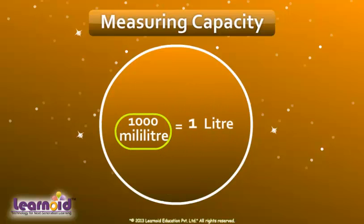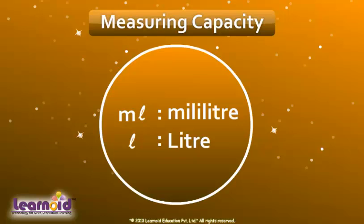1000 milliliter is equal to 1 liter. In short, we can write ml for milliliter and l for liter.